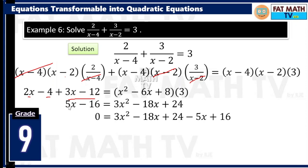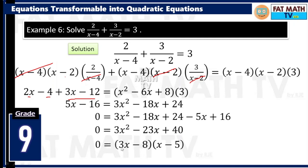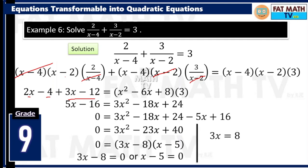On the left side, 2x plus 3x is 5x, and negative 4 plus negative 12 is negative 16. Moving everything to the right: positive 5x becomes negative 5x and negative 16 becomes positive 16. Combine: 3x squared, negative 18x minus 5x is negative 23x, and 24 plus 16 is 40. Factor 3x squared minus 23x plus 40 equals 0 — you get 3x minus 8 times x minus 5. So x equals 8 thirds or x equals 5. You can verify both satisfy the original equation.